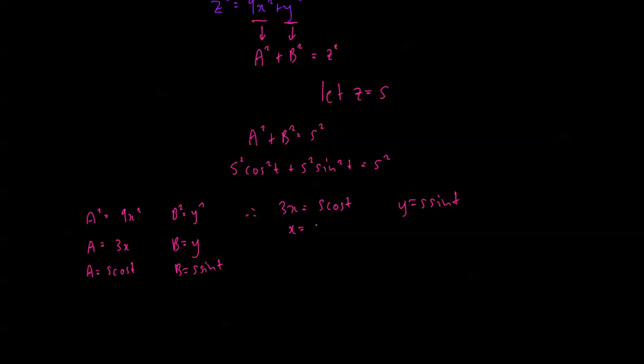So I can rewrite that as x equal to one-third s cos t. So I now have my parameterization. r(s,t) is equal to x, which is one-third s cos t, y, which is s sine t, and z, which is s.